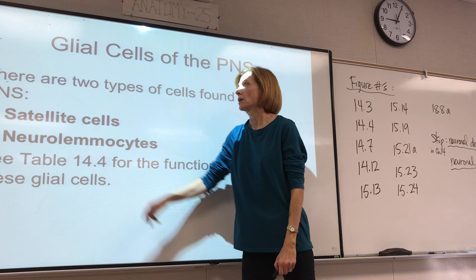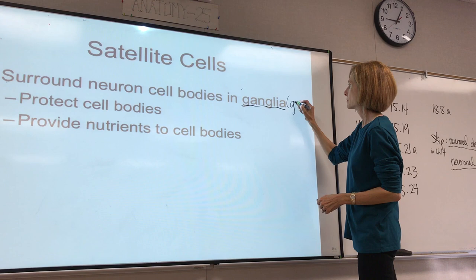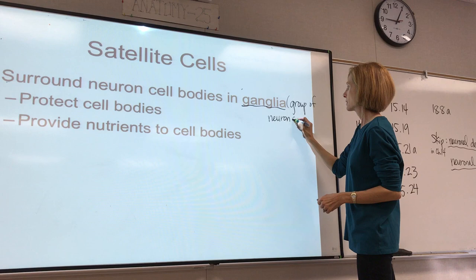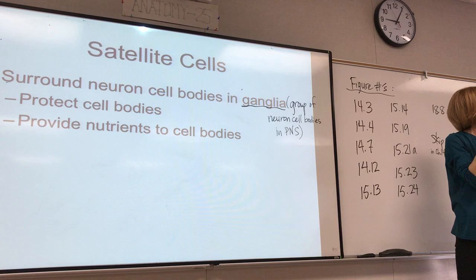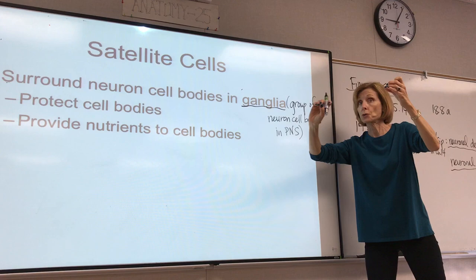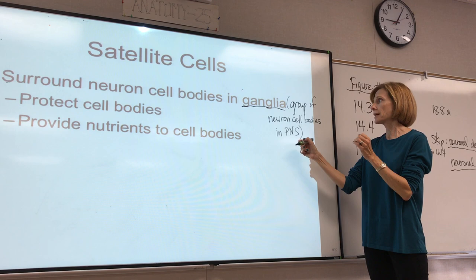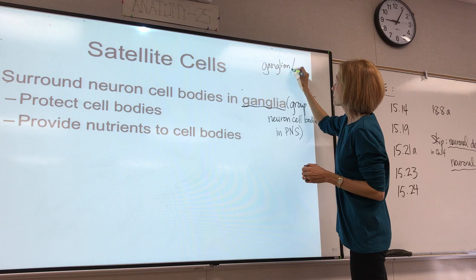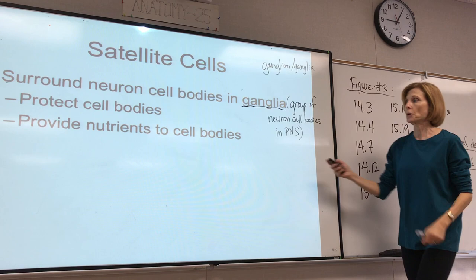There are two types of neuroglial cells in the PNS. Satellite cells are located around sensory neuron cell bodies. A ganglion is just a grouping of neuron cell bodies. Neurons are organized so that their cell bodies are located together and their axons travel together. A group of neuron cell bodies out in the PNS is called a ganglion — ganglion is singular, ganglia is plural. Satellite cells protect the neuron cell bodies as well as providing nutrients to them.